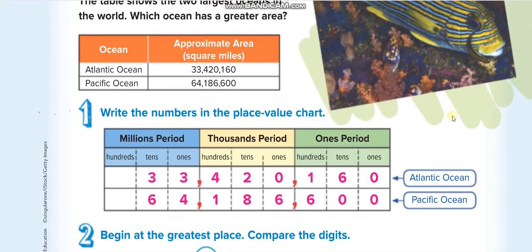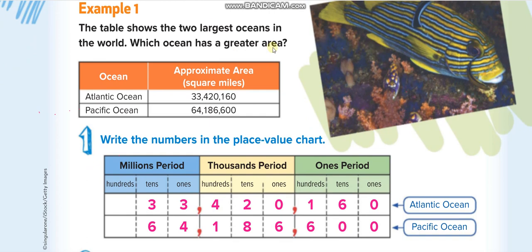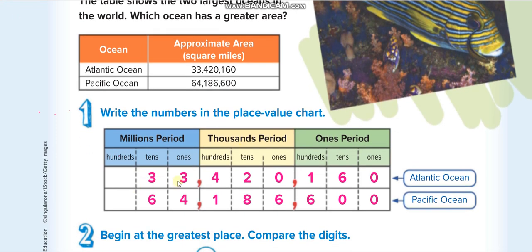Now here is the first question. We have to find out the greater area between the Atlantic Ocean and Pacific Ocean. You guys know how to read the numbers. If not, you can watch my Grade 4 videos, Chapter 1, Lesson 2. But I'm sure you guys know it.